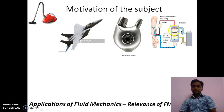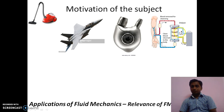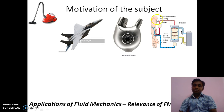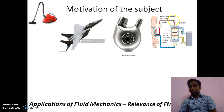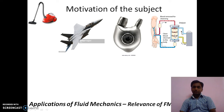Consider a dialysis system in which impure blood is taken out from the body, cleaned in the dialyzer, and pure blood is redirected back to the body. The piping system and dialyzer are designed on the basis of fluid mechanics — what diameter to give, at what rate the blood should flow, and at what rate the blood should get cleaned within the system.